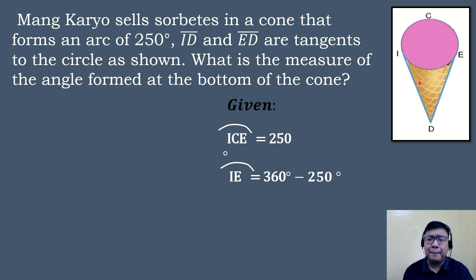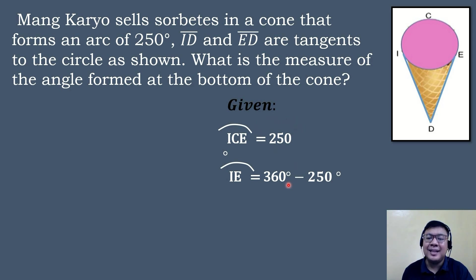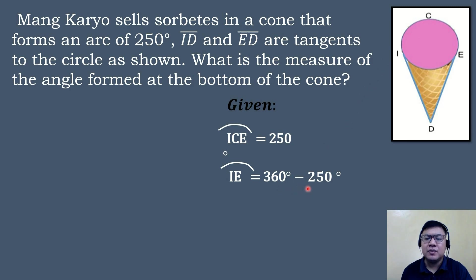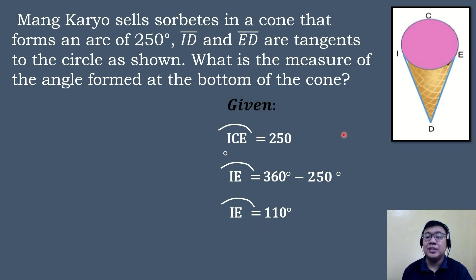And then after that, to find the measure of angle IDE — the bottom of the cone — we need to find the measure of arc IE. So to find the measure of arc IE, we will subtract from 360 degrees, because the measure of a whole circle is equal to 360 degrees. We will apply the arc addition postulate. So 360 degrees minus 250 degrees is equal to 110 degrees. So the measure of arc IE is equal to 110 degrees.